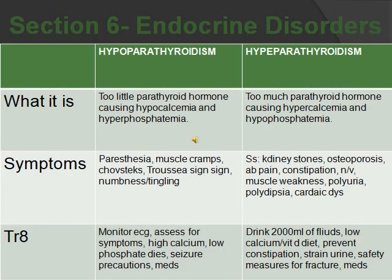Hypo and hyperparathyroidism: the parathyroid gland maintains calcium and phosphorus balance. Too little parathyroid — hypoparathyroidism — causes hypocalcemia (too little calcium) and hyperphosphatemia (too much phosphorus). Too much parathyroid — hyperparathyroidism — causes hypercalcemia (too much calcium) and hypophosphatemia (too little phosphorus).